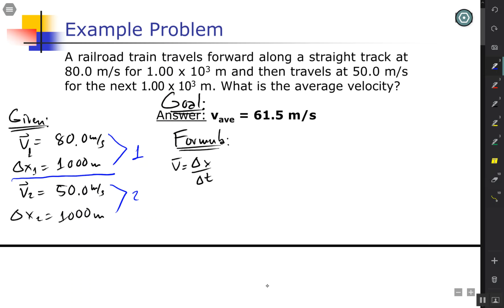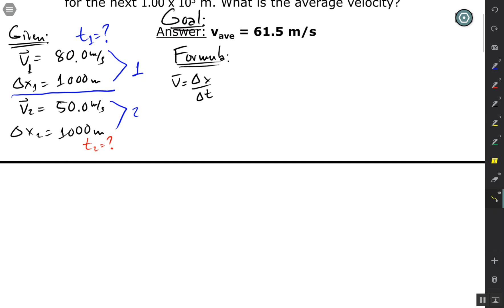One important thing about this problem is that take notice there's actually two parts to the motion, one and two. The first part I have already an average velocity just for that first part, and the same thing goes for the second part. I don't know what t2 is, but I can infer by the faster it's going for part one then the time must be less than that when it's going slower. So I'm expecting a bit more time for t2.